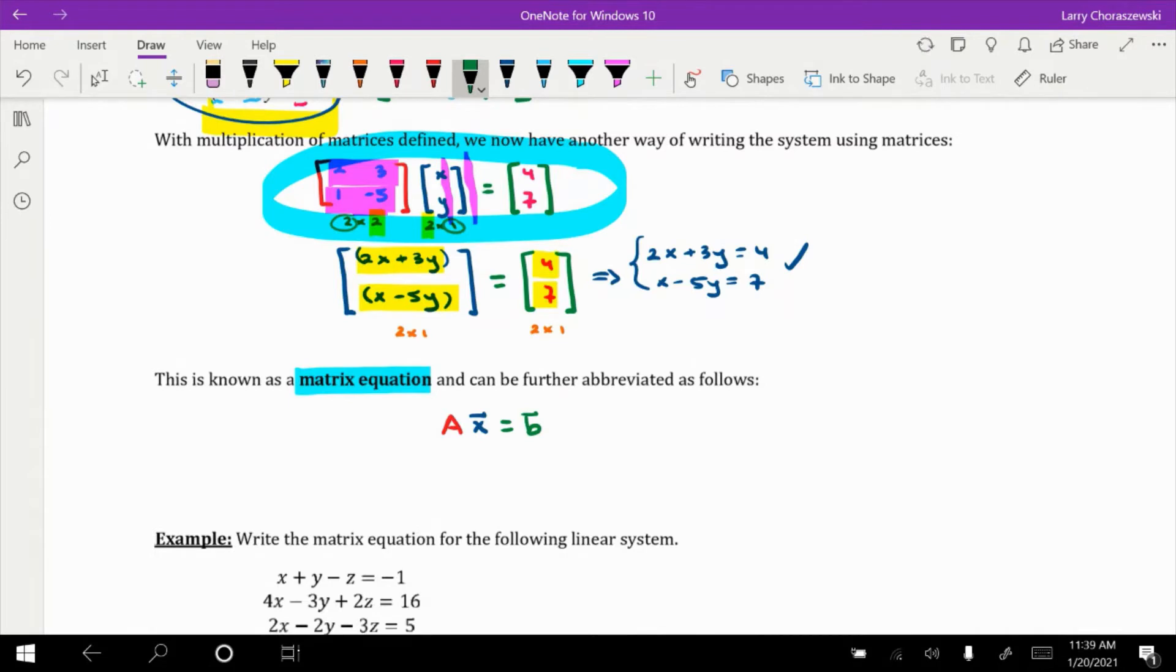Now, there are three matrices here. On the left, the matrix A, it's known as a coefficient matrix. Those will consist of the coefficients of the variables. The matrix X is referred to as the column matrix of unknowns, a.k.a. variables. The matrix B is known as the column matrix of constants.